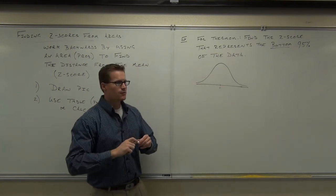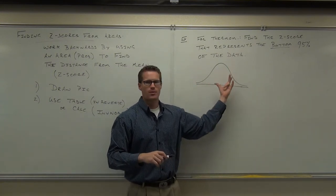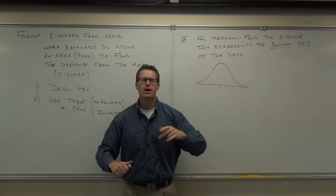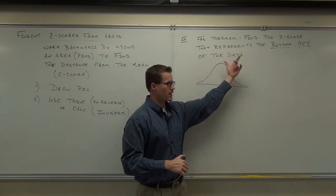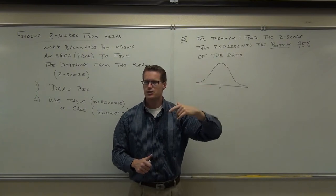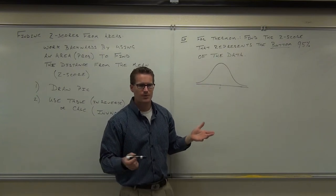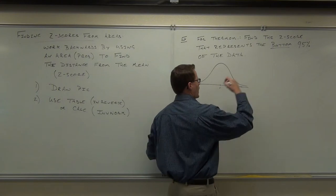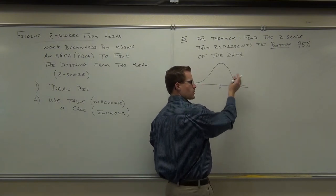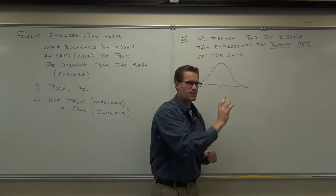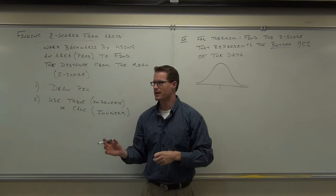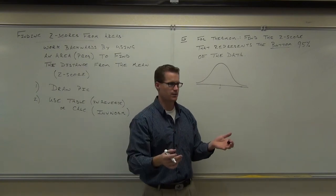Now, what we want to do instead of looking for a z-score to a probability, which is what we've been doing this whole time, we're going to be going from a probability or an area to a z-score. So normally, this is what we would have happen here. I would be drawing a line, putting a z-score, and shading one side of this. I'd be looking up that area in my table or in my calculator, and that would be the probability.